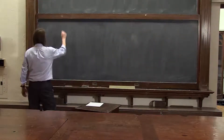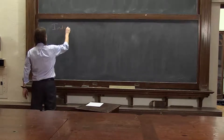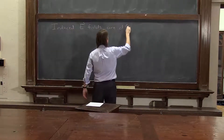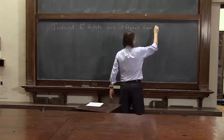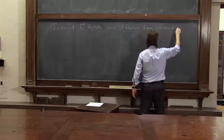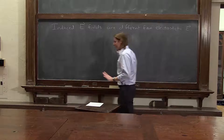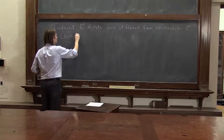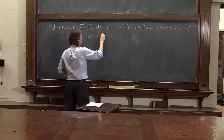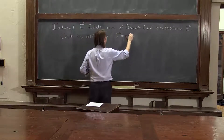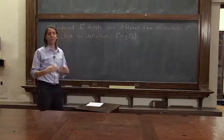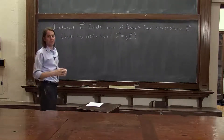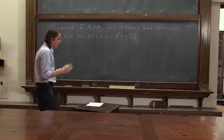We have this new kind of electric field, so we should point out that induced E-fields are different from electrostatic fields. I don't want to make it sound like there are two kinds of electric field — there is only one electric field. Both, by definition, say that F equals Q times E. That's still what an electric field is. It's just if you have one created by static charge, and one created by induction, they just behave differently, and certain things you calculate about them will come out different. They're still both just electric fields.